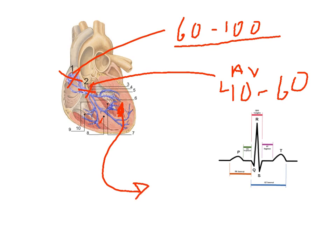But again, that intrinsic rate of firing is going to be much slower at 20 to 40 a minute. So optimally, ideally, we want to have the SA node in control of the heart.